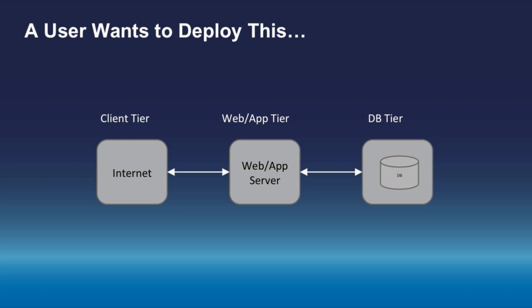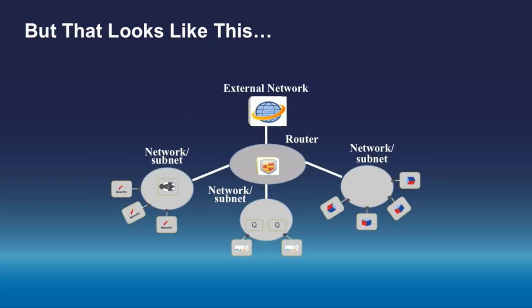However, when they go into Neutron and Nova and want to deploy this, the way it looks is: external network, router, network, subnets — you have to define all these entities, decide what you're going to use, and then implement the network model trying to map over the application model that you really wanted.